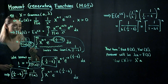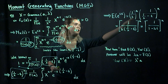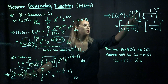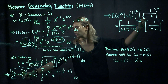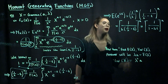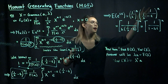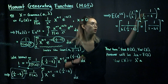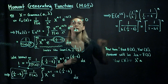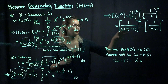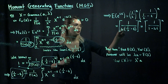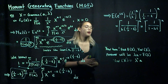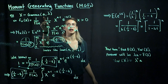We still have 1 over lambda to the a, and then we have 1 over lambda minus t to the a. Since both are raised to the a, we can combine them: 1 over lambda times 1 over lambda minus t, all to the a. Looking inside, multiplying lambda across: lambda times 1 over lambda is 1, and lambda times t is lambda t. So our MGF for the gamma distribution with parameters a and lambda is 1 over 1 minus lambda t, all to the a.